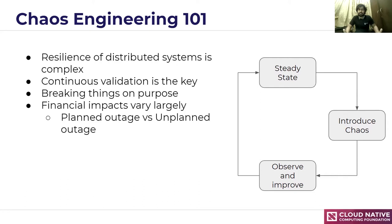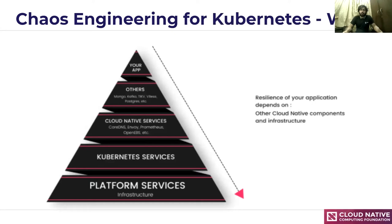What are the real-life examples? Take Netflix — they invented chaos engineering. Consider what happens if the number of users spikes: for example, a new season of Money Heist drops and there's a surge of users. How do you ensure there's no outage in that scenario? Chaos engineering: first identify the steady state, then introduce chaos, observe, and improve accordingly. The financial impacts of an unplanned outage can create havoc in your organization, while a planned outage allows you to reduce the impact.